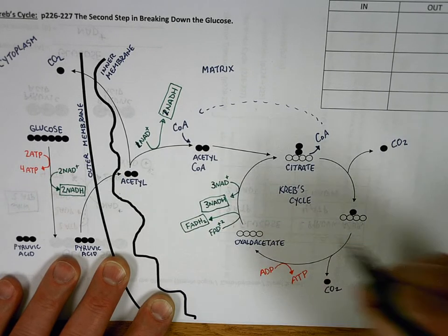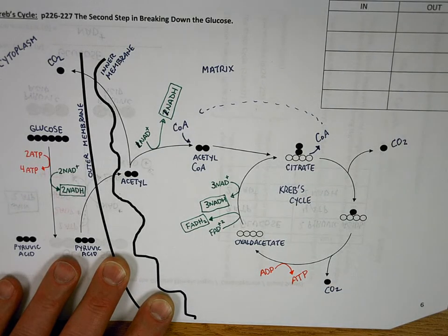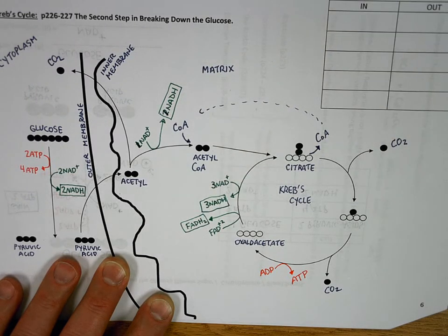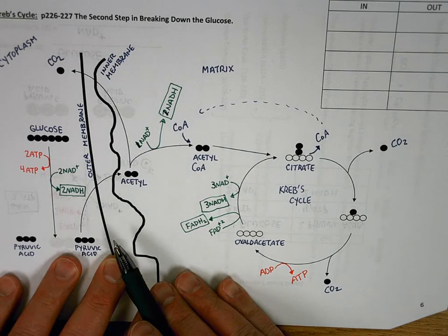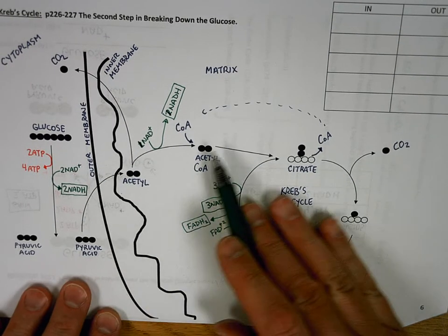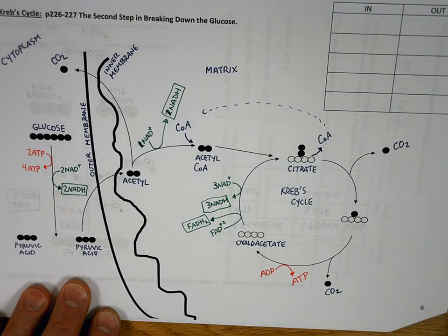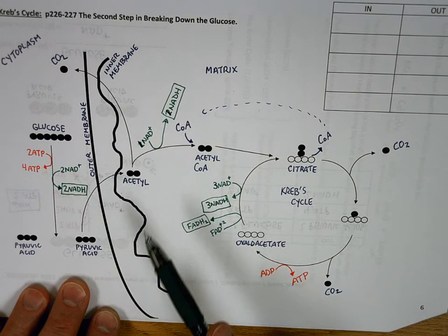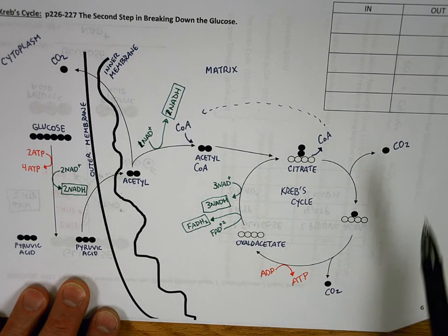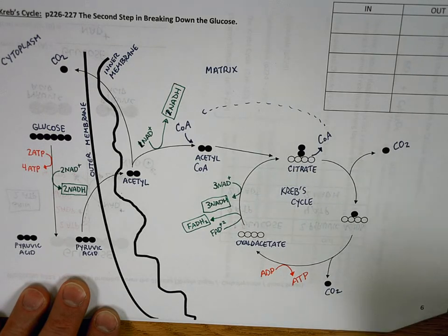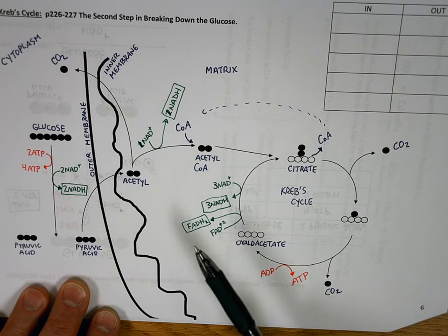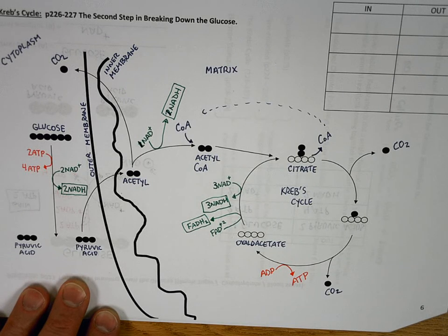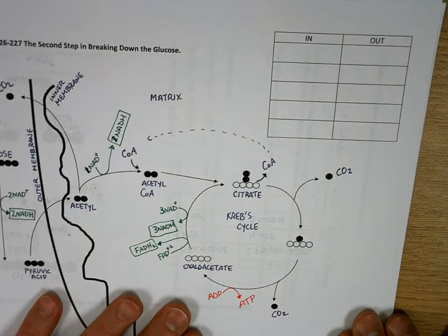You can see here that there are several places so far that we've picked up electrons. Now, if you get the total number of molecules involved here, you have to double everything by two because when one pyruvic acid comes in, one NAD picks up electrons, one CO2 is given off here and here. We say that three NADs pick up electrons and one FAD here. But when the next one comes through, it's going to do the same thing.